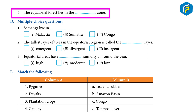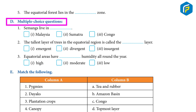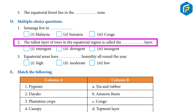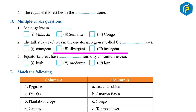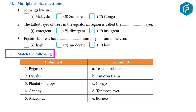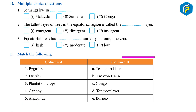5) The Equatorial Forest lies in the __ zone. Multiple choice questions: 1) Simangs live in: 1-Malaysia, 2-Sumatra, 3-Congo. 2) The tallest layer of trees in the Equatorial Region is called the __ layer: 1-Emergent, 2-Divergent, 3-Insurgent. 3) Equatorial areas have __ humidity all around the year: 1-High, 2-Moderate, 3-Low. Match the following: 1-Pygmies, 2-Dayaks, 3-Plantation Crops, 4-Canopy, 5-Anaconda matched with: Tea and Rubber, Amazon Basin, Congo, the topmost layer, Borneo.